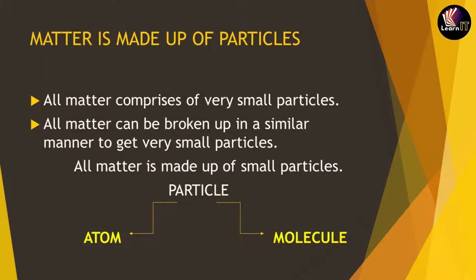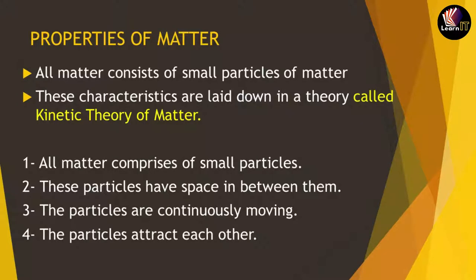Now let us move to what matter is made up of. Basically, matter comprises very small particles. All matter can be broken down in a similar manner to get very small particles. We can divide these particles into two categories: one is known as an atom, and the second is known as a molecule. So matter is made up of particles, and particles are made up of atoms and molecules.